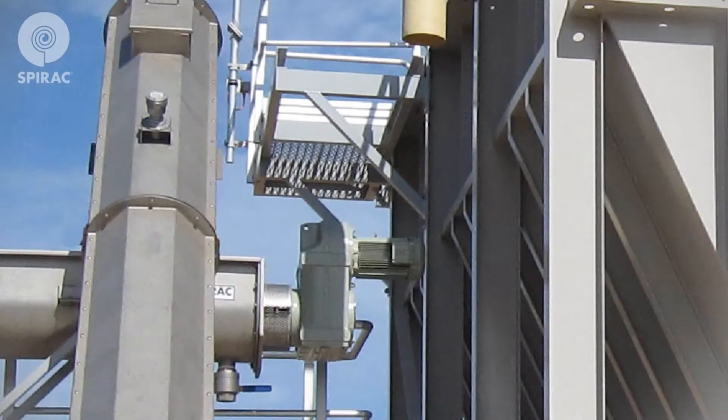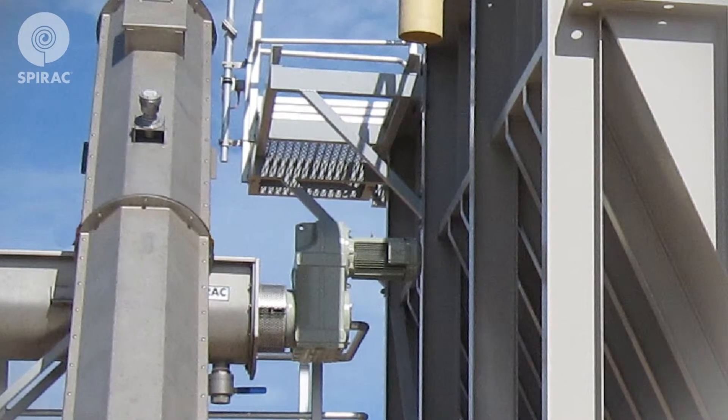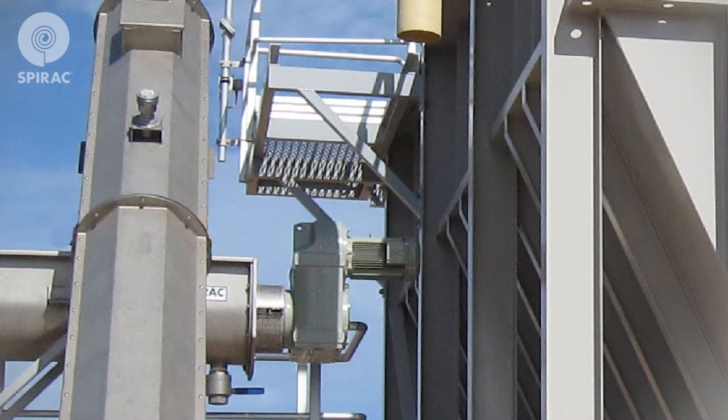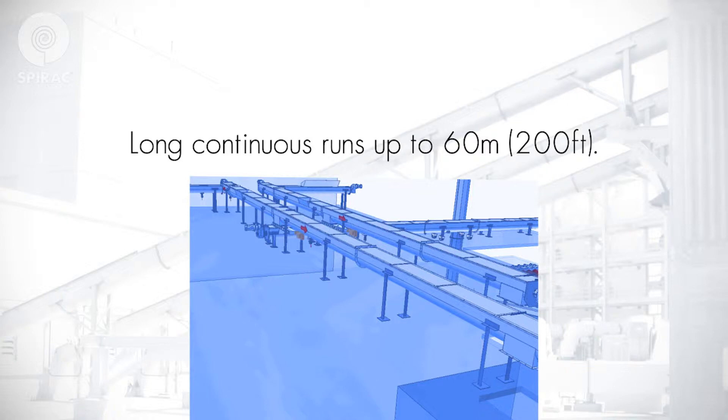SPIRAC conveyors use totally enclosed troughs and direct-coupled gearboxes, which ensure a clean transmission, long continuous runs, and low maintenance.